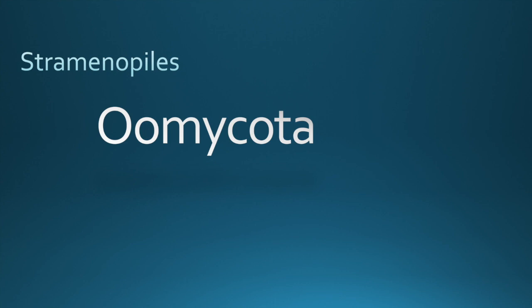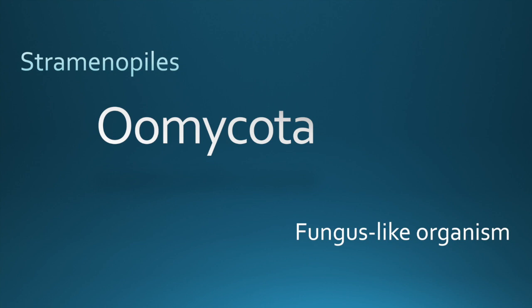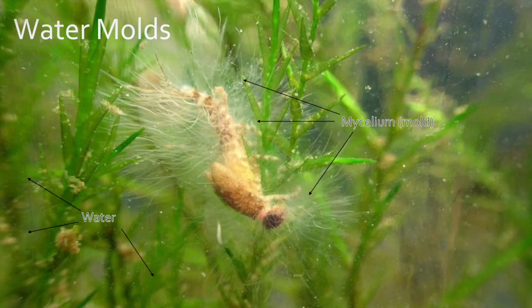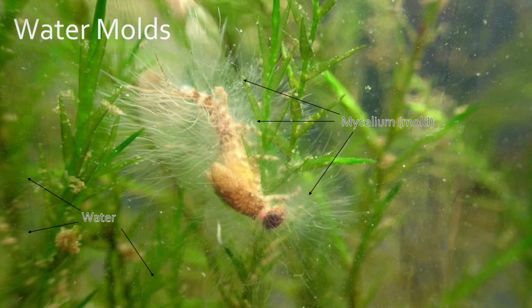You might call it an oomycete. You should certainly not say a fungus. Within the stramenopyle is a clade of organisms called the oomycota, or oomycetes. Sometimes they're called water molds, because they grow in water and form mycelium-like molds. Sometimes they're called egg fungi, because they produce mycelium-like fungi, and they produce a large gamete like an egg called an oogonium.